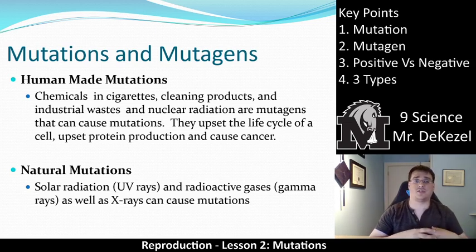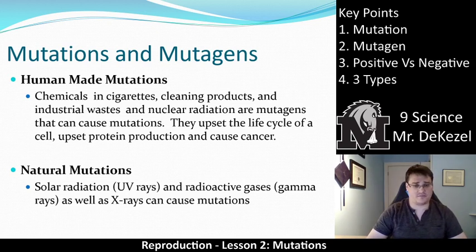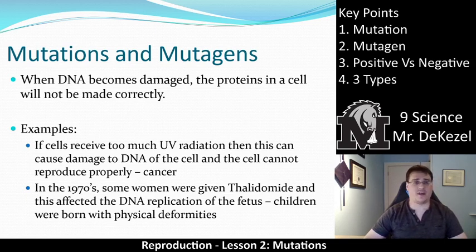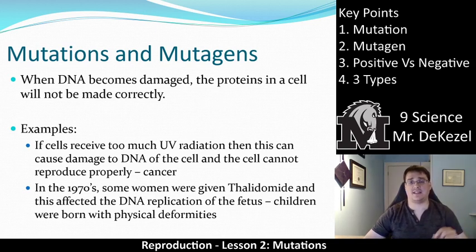A change isn't always good or bad — they vary. When DNA becomes damaged, the proteins in the cell will not be made correctly. That at a cellular level is what a mutation is — the DNA becoming damaged. Mutations occur when DNA is damaged by a mutagen.